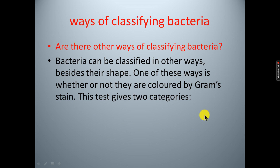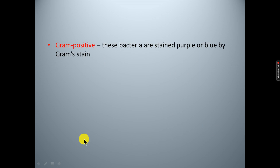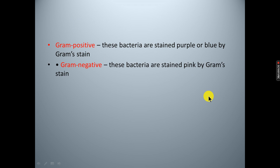The gram stain test gives two categories: gram positive and gram negative bacteria. Gram positive bacteria are those that stain purple or blue by gram stain. Gram negative bacteria are those that stain pink by gram stain.